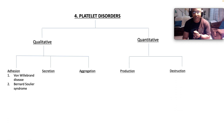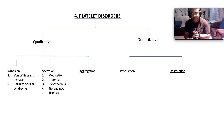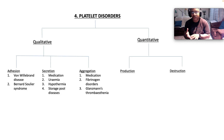What causes adhesion problems? Von Willebrand disease, which is the most common qualitative issue with platelets, and then Bernard-Soulier syndrome. Secretion issues come in the way of medication, uremia, hypothermia, and storage pool disease. Aggregation problems come again from medication, fibrinogen disorders, and Glanzmann's thrombasthenia.